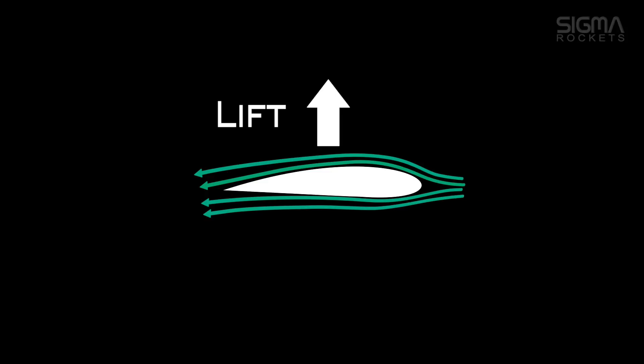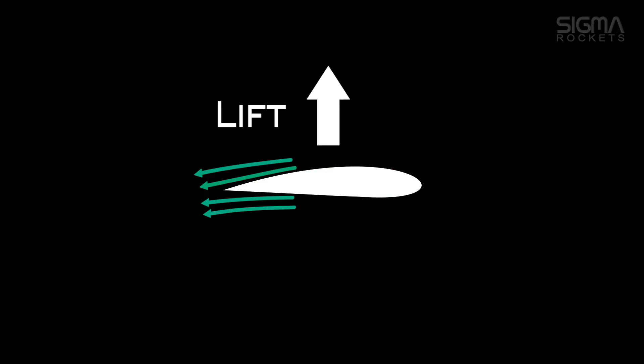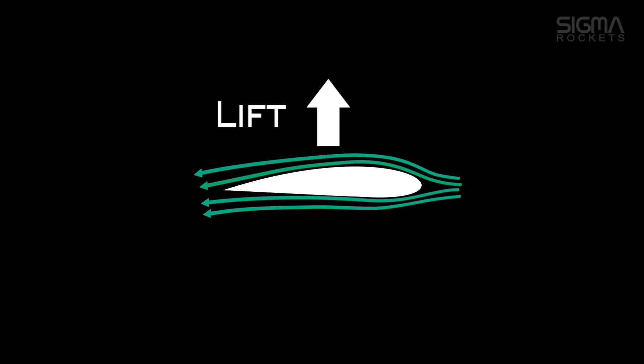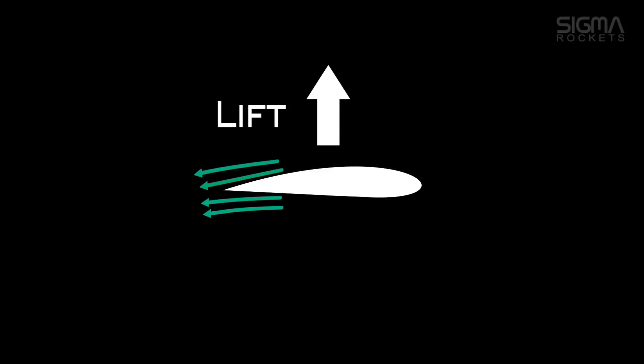As we see in the cross section of an airplane wing, the shape forces the air to move more quickly on the top of the wing as compared to the bottom. This creates an area of lower pressure, which in turn creates lift.